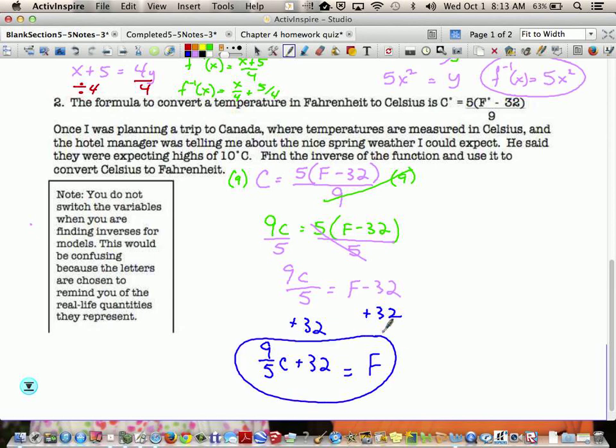So what happens when I plug the 10 in? 10 degrees Celsius goes in for C. So what's 9 fifths times 10? You could do 10 divided by 5 is 2, and 2 times 9 is 18. Plus 32. It's 50. So 10 degrees Celsius equals 50 degrees Fahrenheit.